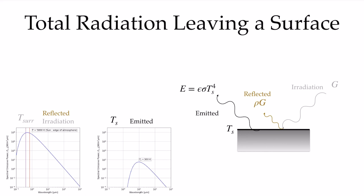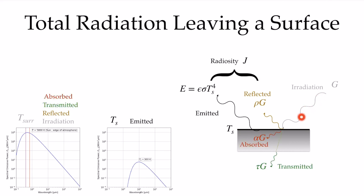The total radiation leaving a surface is the combination of that which is emitted because it's at some finite temperature, and that which it is reflecting of the incident radiation. We combine those two together — the emitted radiation and the reflected radiation — and give it the symbol J, called the radiosity. It's important to remember that the surface is emitting at perhaps a much lower temperature, often around room temperature, which can have a spectrum very different from the irradiation. The reflected radiation will have the spectrum of the irradiation, which can be wildly different — especially when talking about room temperature surfaces and radiation coming from the sun.